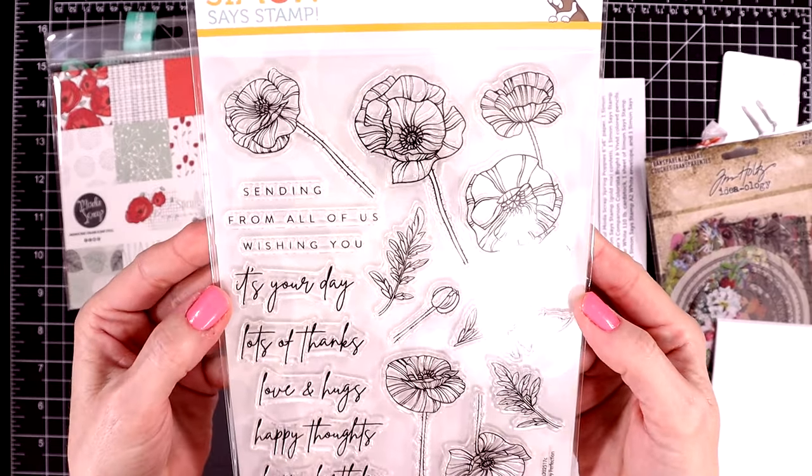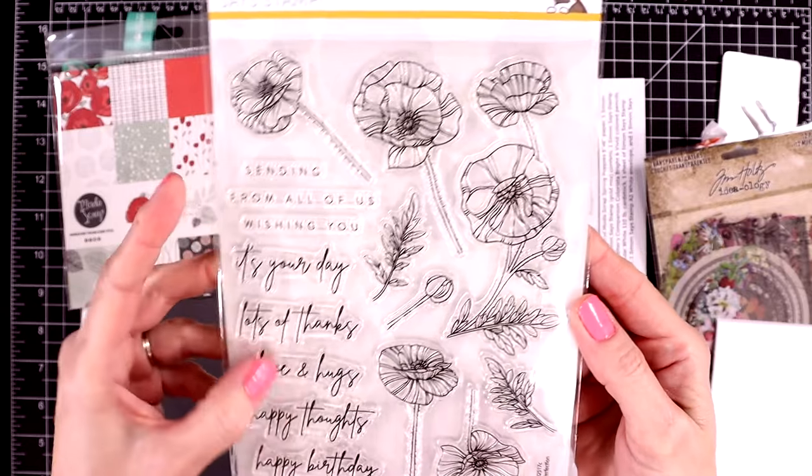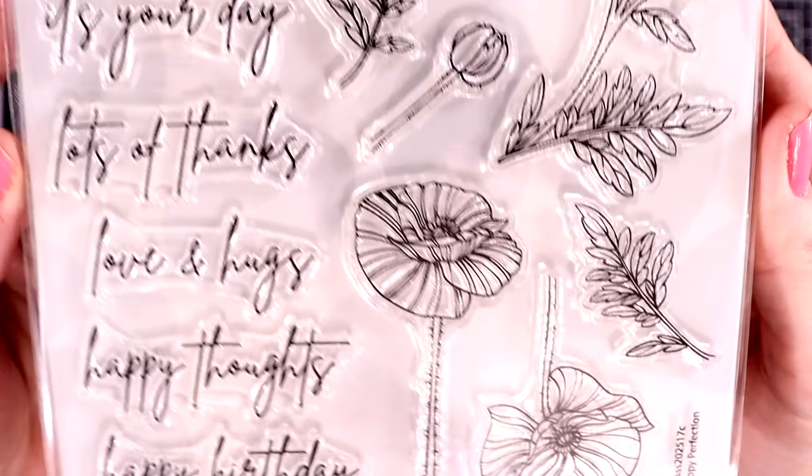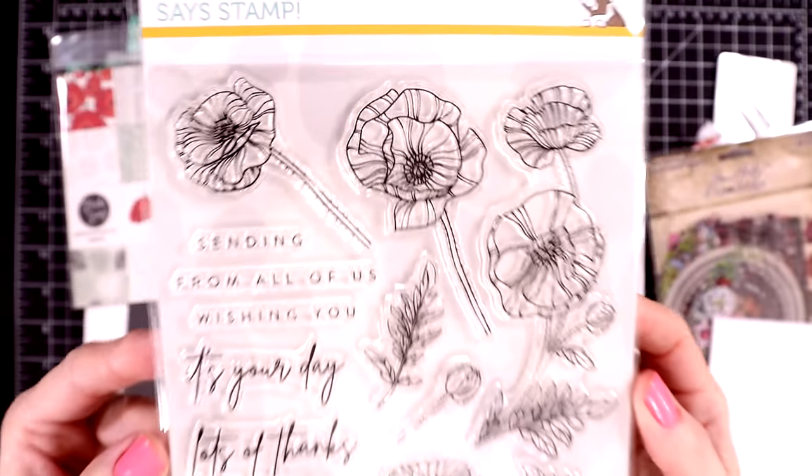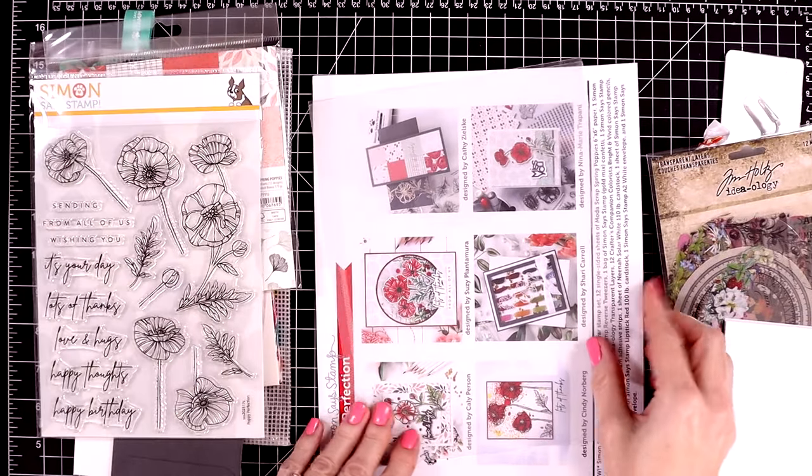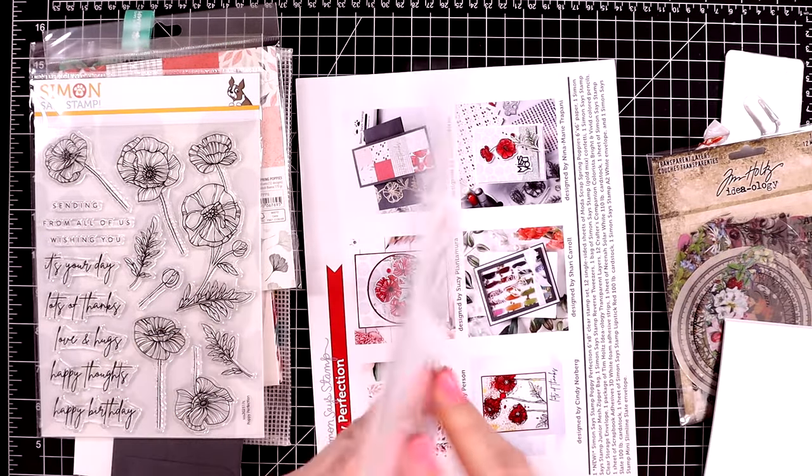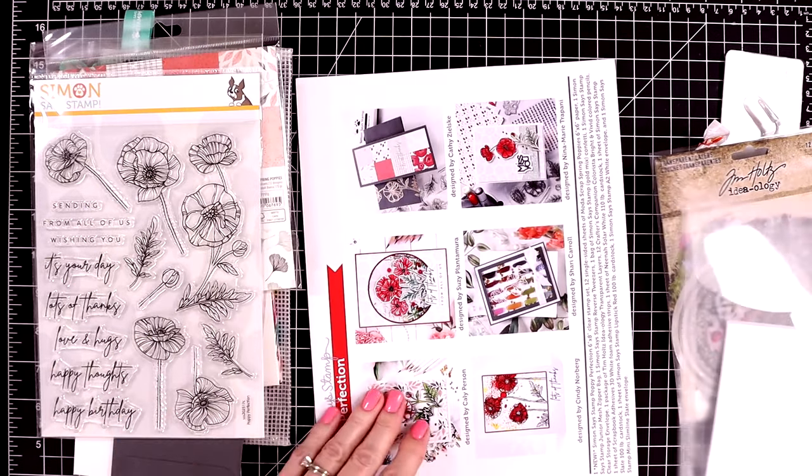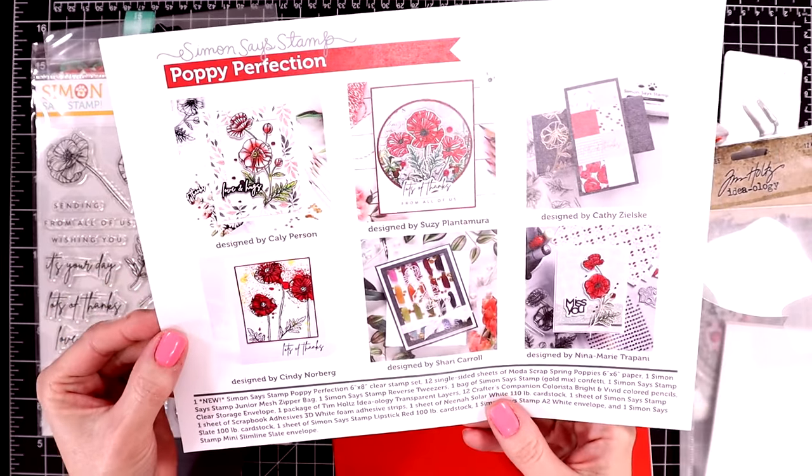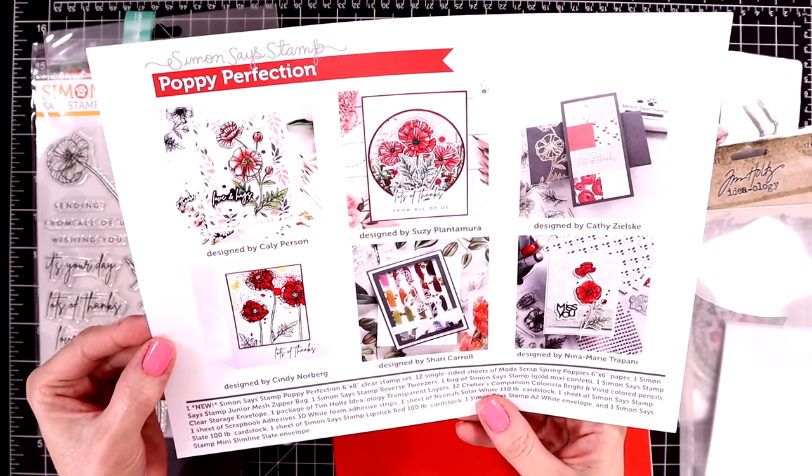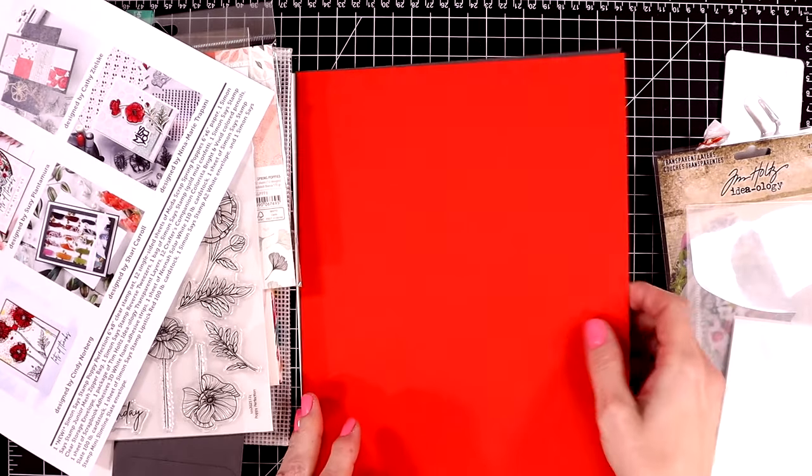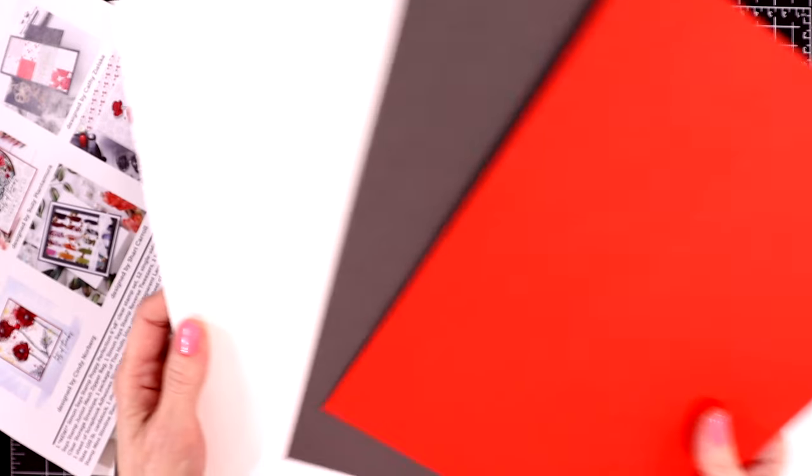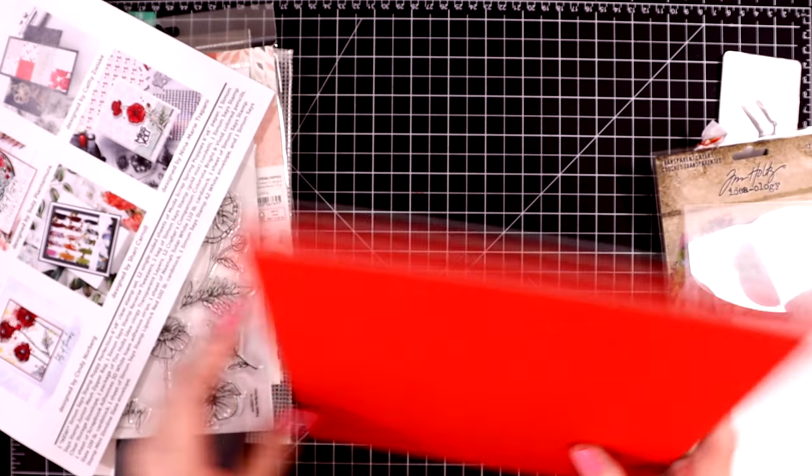And then here is the stamp set called Poppy Perfection. The sentiments are so pretty as well. And there's sentiments for multiple occasions. I believe you can buy the coordinating dies but they don't come with the kit. Here is a clear storage envelope. I like to use these for my pattern paper scraps. And here is the example page and it also tells you everything that's included in the kit. Then you get three sheets of cardstock. The colors are Lipstick Red, Slate, and Neenah Solar White 110 pound.